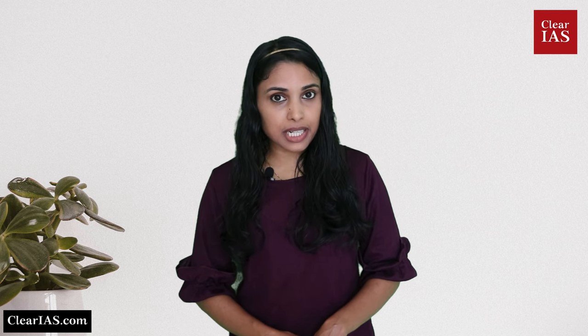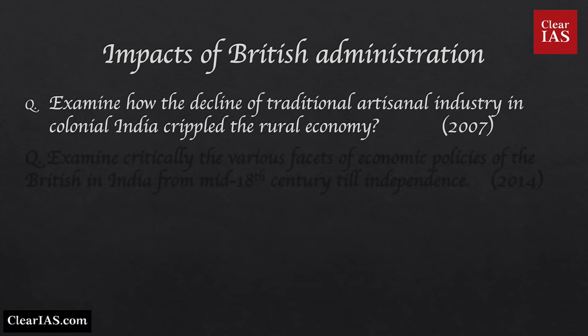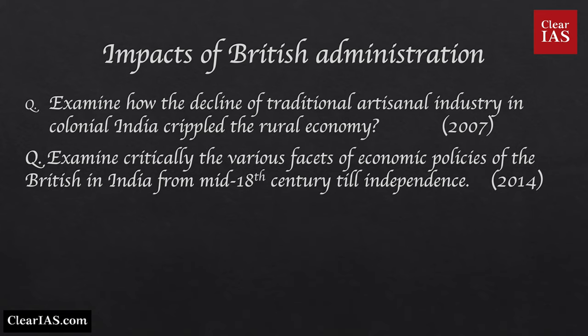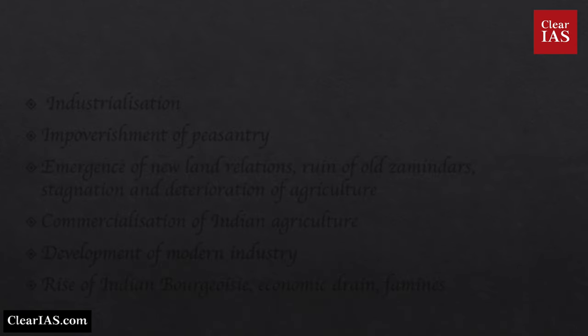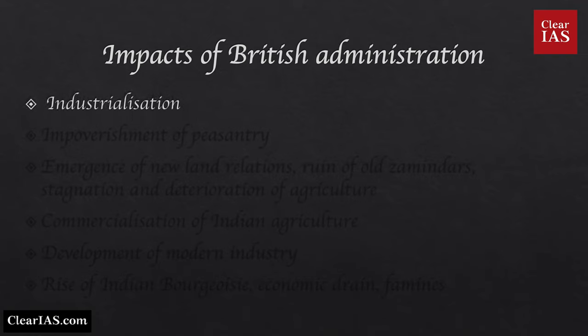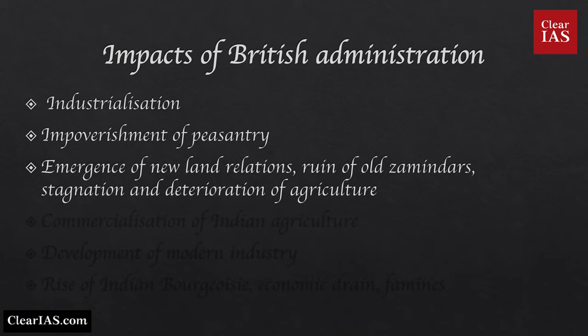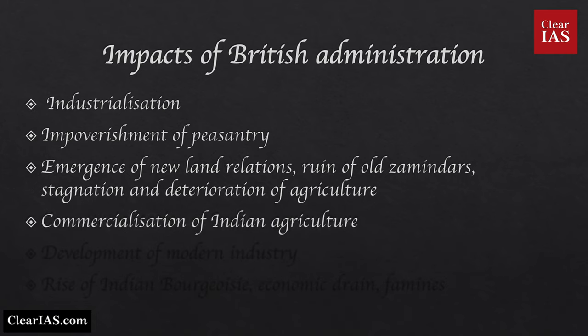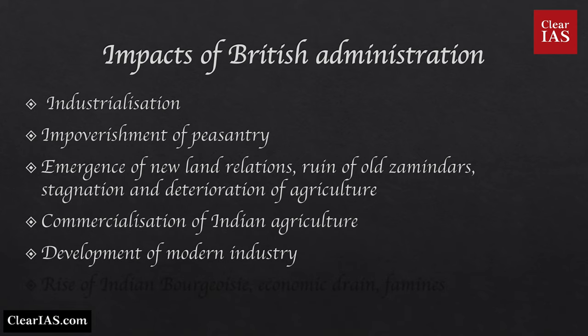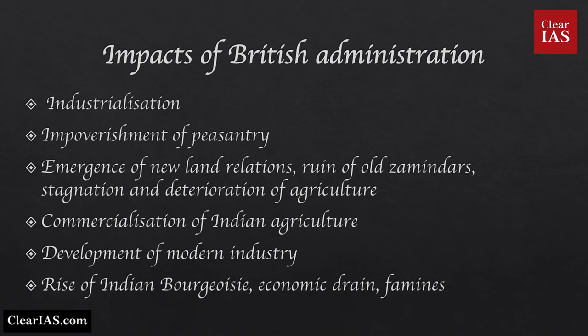Various impacts of British administration is a repeatedly asked topic. Sample Mains questions: Examine how the decline of traditional artisanal industry in colonial India crippled the rural economy. Examine critically the various facets of British economic policies from mid-18th century till independence. Important things to learn include industrialization, impoverishment of peasantry, emergence of new land relations, ruin of old zamindars, stagnation and deterioration of agriculture, commercialization of Indian agriculture, development of modern industry, rise of Indian bourgeoisie, and economic drain.